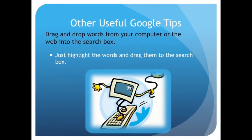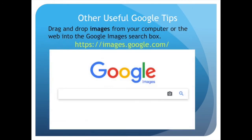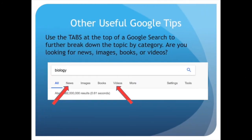Other useful Google tips: you can drag and drop words from your computer or the web into the search box — just highlight the words and drag them in. You can also drag and drop images from your computer or the web into the Google Images search box. Use the tabs at the top of a Google search to further break down a topic by category — are you looking for news, images, books, or videos?